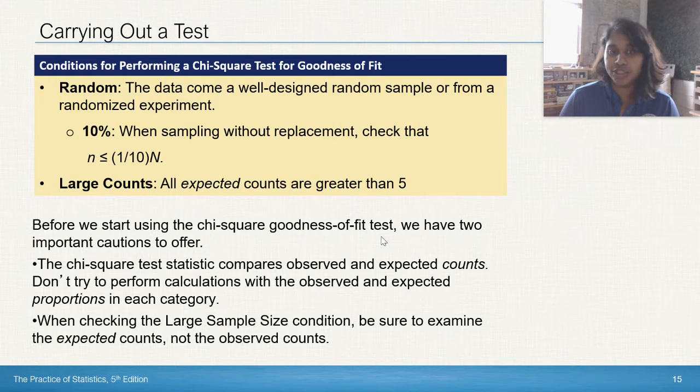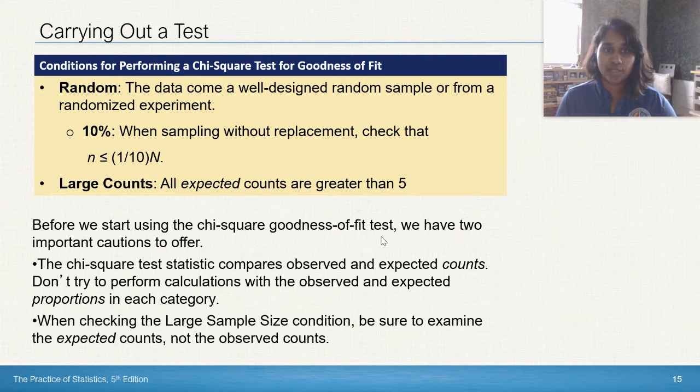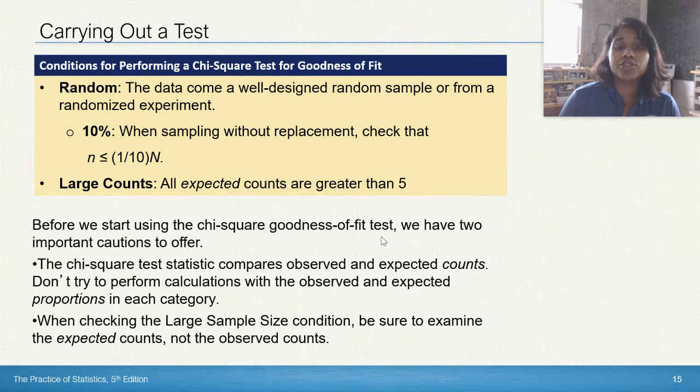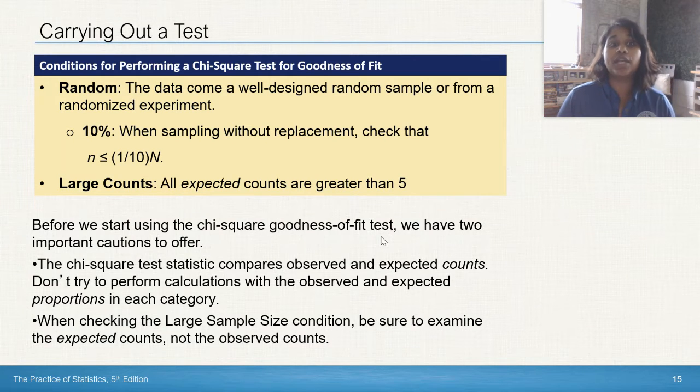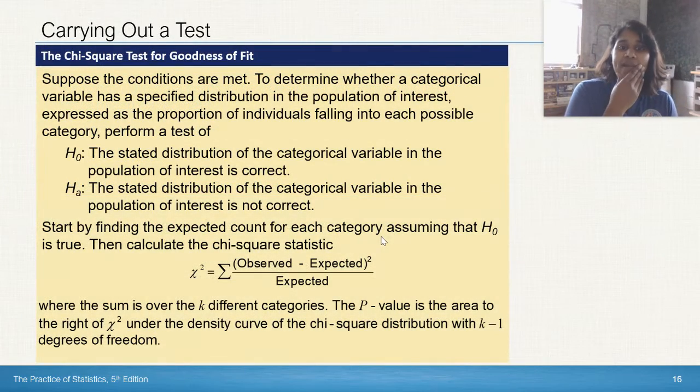Two big important cautions to make. Do not perform your calculations with proportions. We've been talking about counts, counts, counts, counts, counts. Make sure it is only counts. And when you're checking the large sample size condition, make sure you're checking expected counts, not the observed counts.